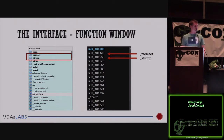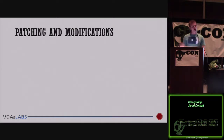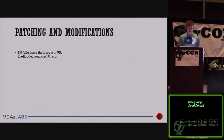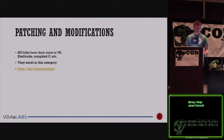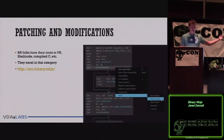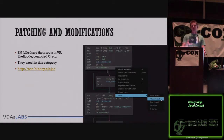Similarly, in the imports window, IDA found memcpy, strcpy, and all the library functions the program was linked against and does a good job labeling them. In BINJA, you'd have to manually name those — they're just called sub_virtualaddress. That's not hard to get over, but as a reverse engineer, any little thing you don't have to do is good. One place BINJA excels, because of their vulnerability research background, is patching and modifying binaries — changing binaries, adding shellcode, anything hacker-ish — they're pretty good at that.